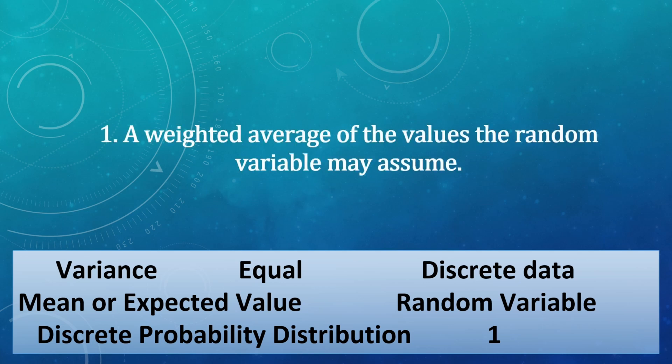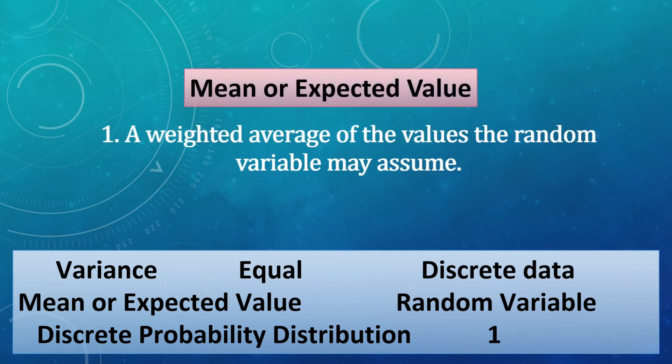Number 1. A weighted average of the values a random variable may assume. Choose your answer. Are you done? The answer is mean or expected value.